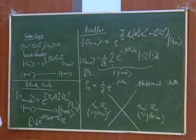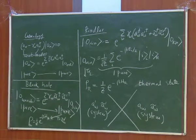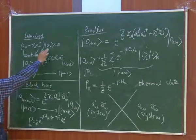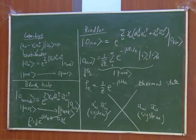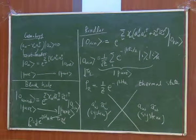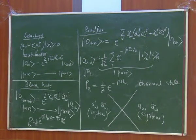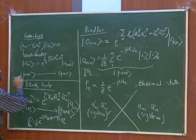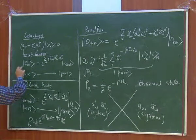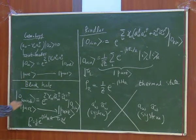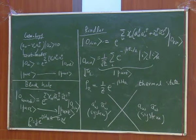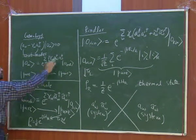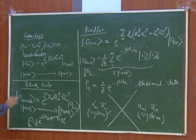What we found in the example of the 2D cosmology is that the in-vacuum was annihilated by a mixture of the creation and annihilation modes of the out particles. As a result, the in-vacuum is some kind of a coherent state built out of a large number of particles — it is a bath of particles. We computed the particle density and it looks like that. Recall that this looks complicated, but it is still a pure state.